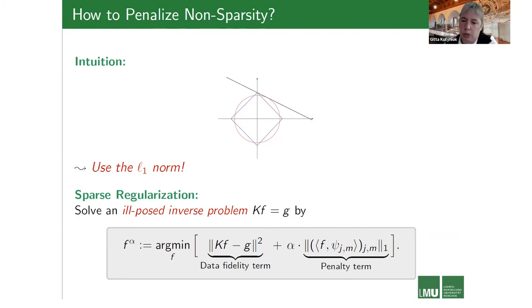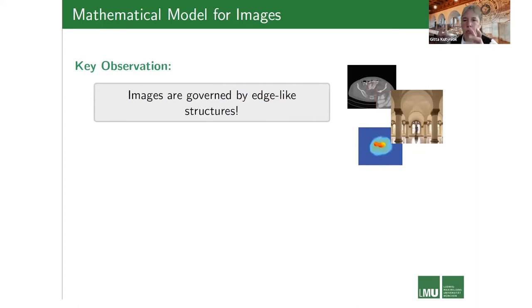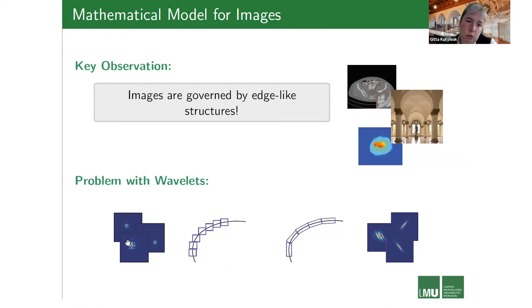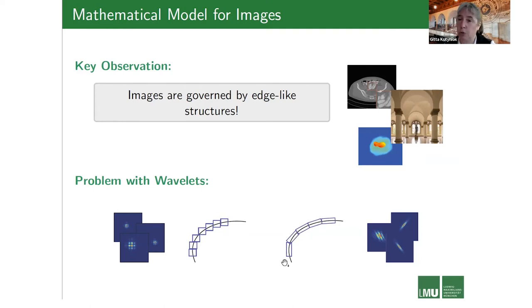The question is how to choose the representation system. Images are typically governed by edge-like structures, and this is something we want to encode efficiently. Wavelets are not ideal for this because, to approximate an edge, you need many wavelet coefficients — many will be non-zero. But if you have elements that are directional themselves, you can represent edges with very few coefficients — most inner products will be zero — giving sparser representations.